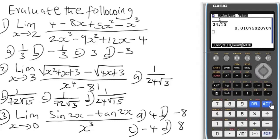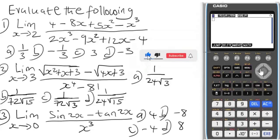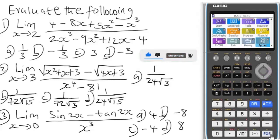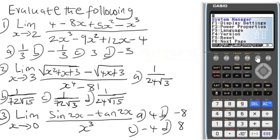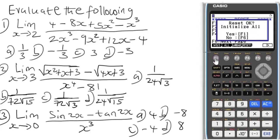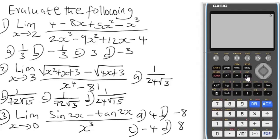Finally, Question 3. Delete everything, then reset the calculator: go to Menu, then System, press EXE, then Reset with F5, next page, Initialize with F2, then Yes with F1 — it will initialize. For this question involving inverse angles (sin and tan), ensure the calculator is in Radians mode. By default, this calculator is in Radians mode.